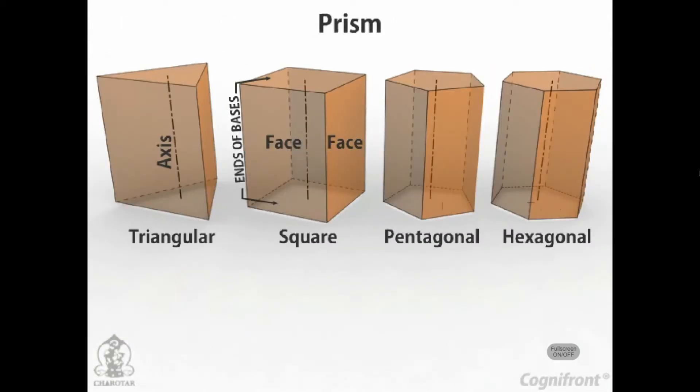Prism: This is a polyhedron having two equal and similar faces called its ends or bases, parallel to each other and joined by other faces which are parallelograms. The imaginary line joining the centers of the bases is called the axis. A right regular prism has its axis perpendicular to the bases. All its faces are equal rectangles.